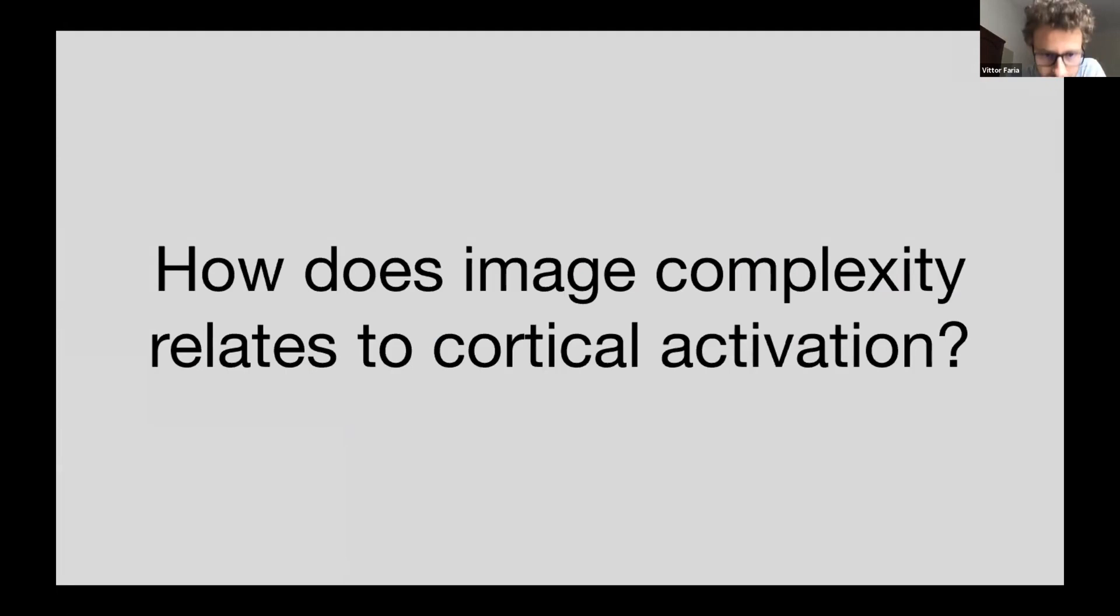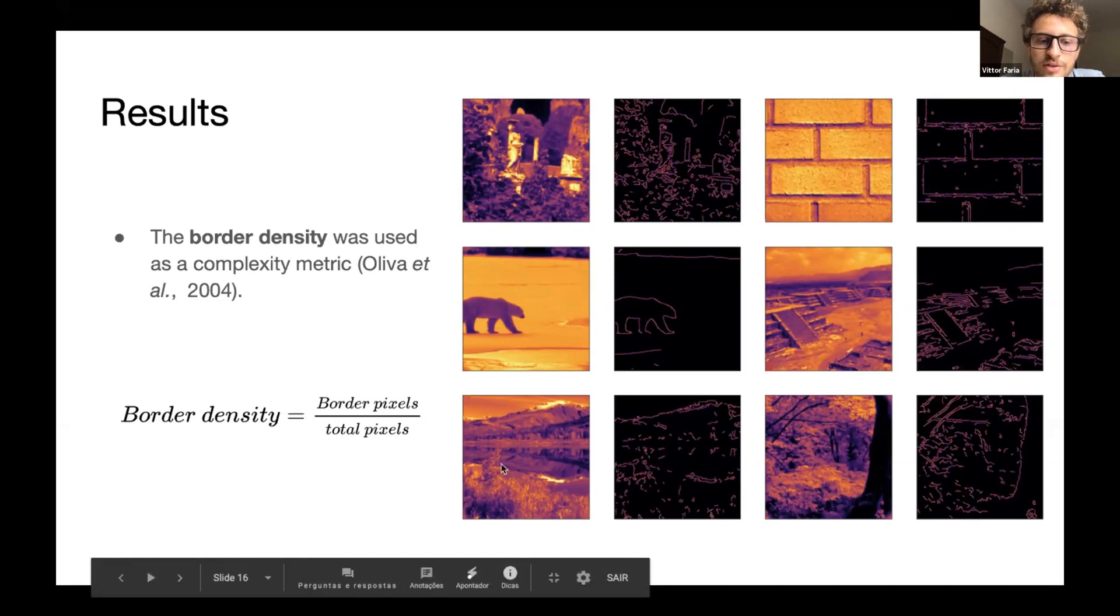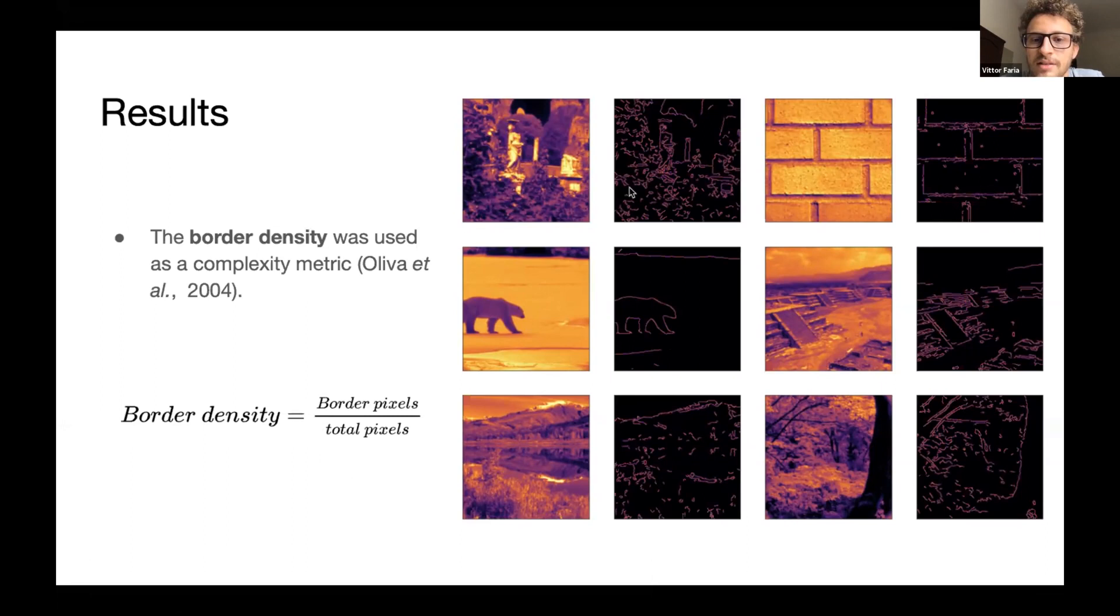The next question we try to answer is how image complexity relates to cortical activation. Then, we use the border density as a complexity metric for the images. And we apply the Kenny algorithm for border detection and compute the border density, some of the border pixels, lighter pixels here in this black images, over the total pixels in the image. And so we see that this image, which has more borders, more white light pixels in the images will be considered more complex than this one of the polar bear here that has less borders.